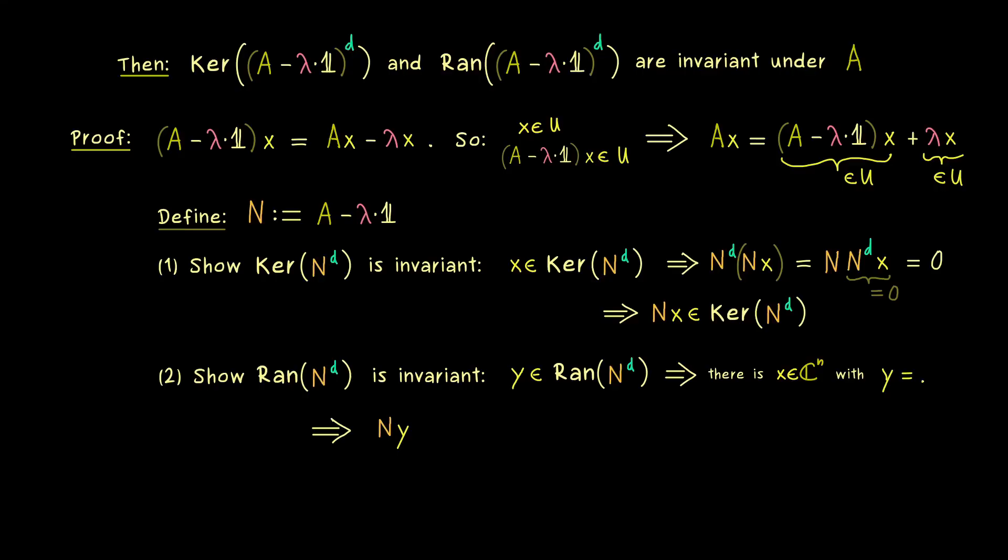Indeed, it just means that we find a pre-image x that belongs to this given y. So in formulas, y is written as N to the power d times x. And obviously, this is what we can use when we want to analyze N times y. So we don't have to do much; we can just put it in. And then, as before, we can just exchange the two matrices, and then we have N to the power d times N times x.